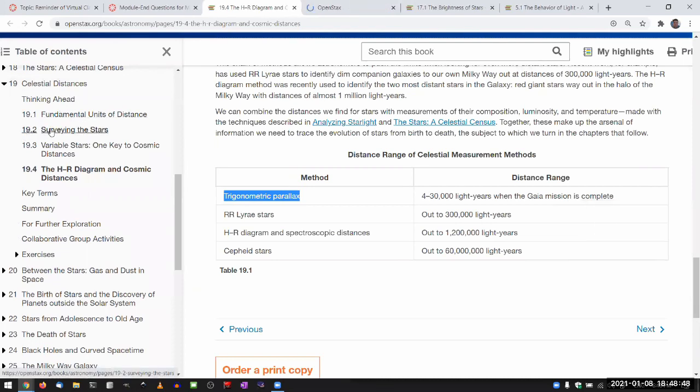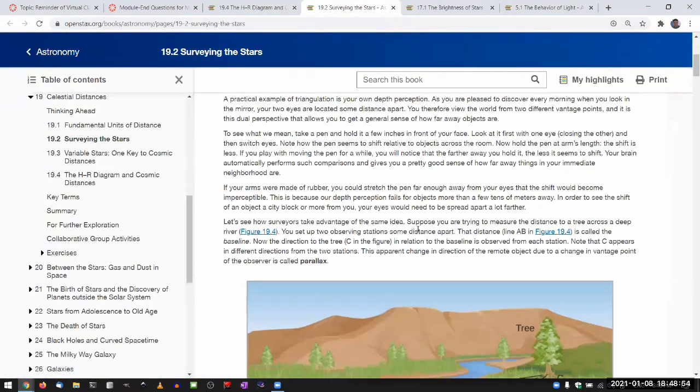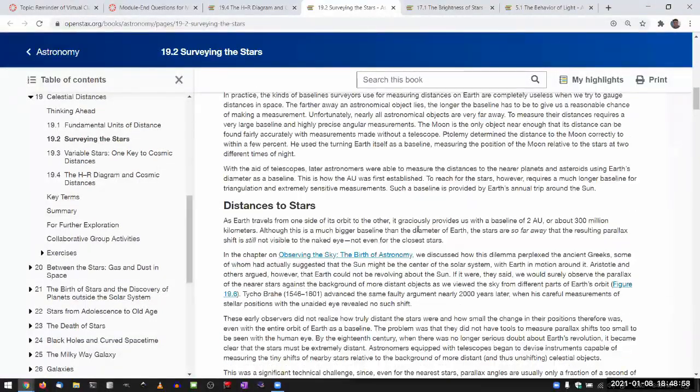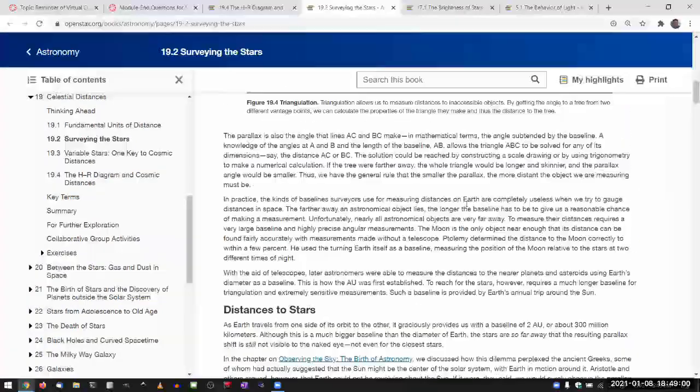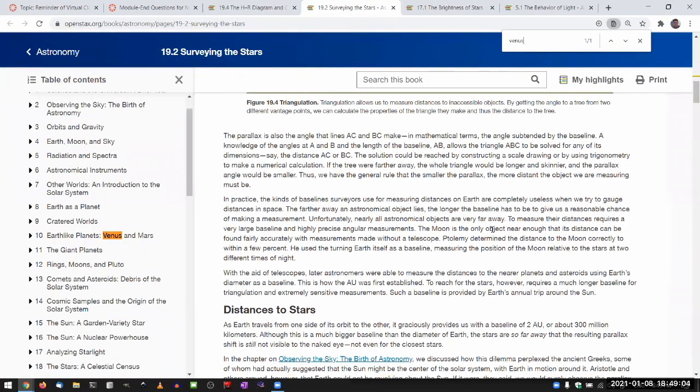You do have to remember what's covered in the other sections. Section 19.2, surveying the stars, covers the parallax method as triangulation in space.